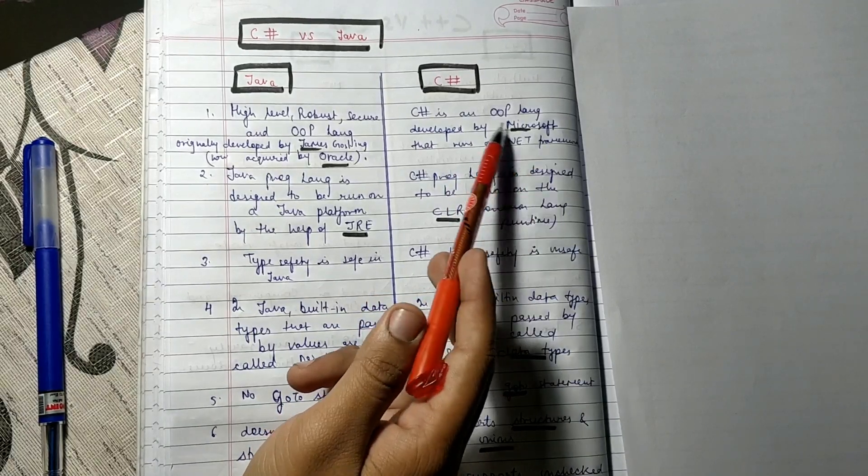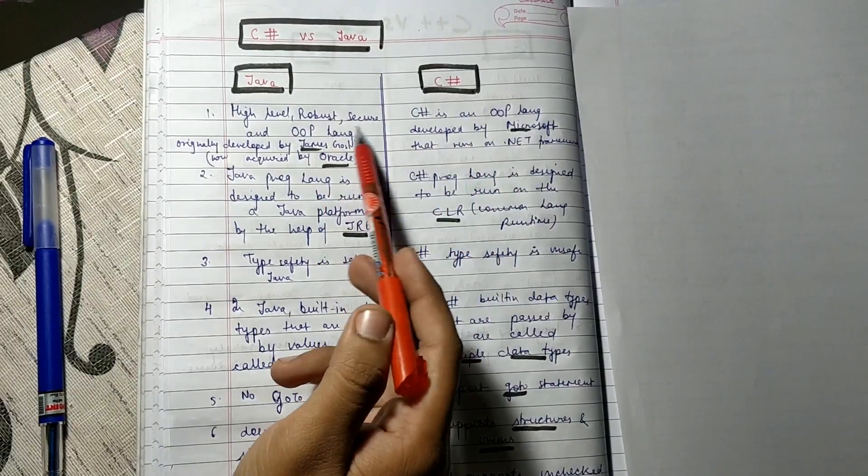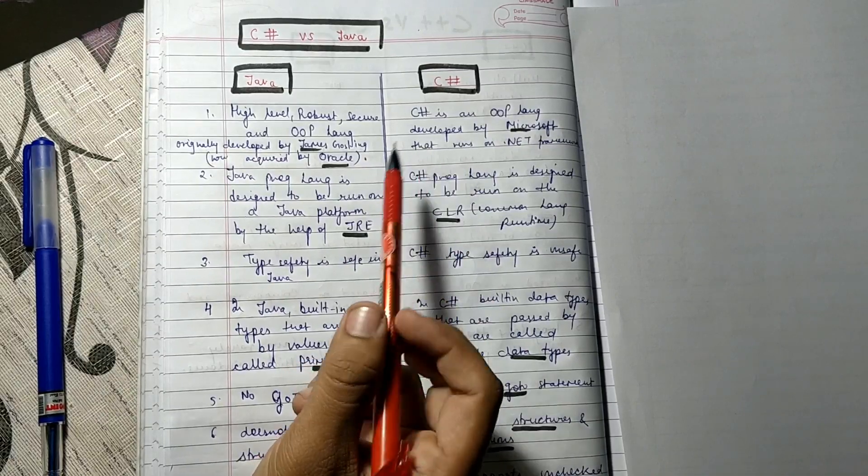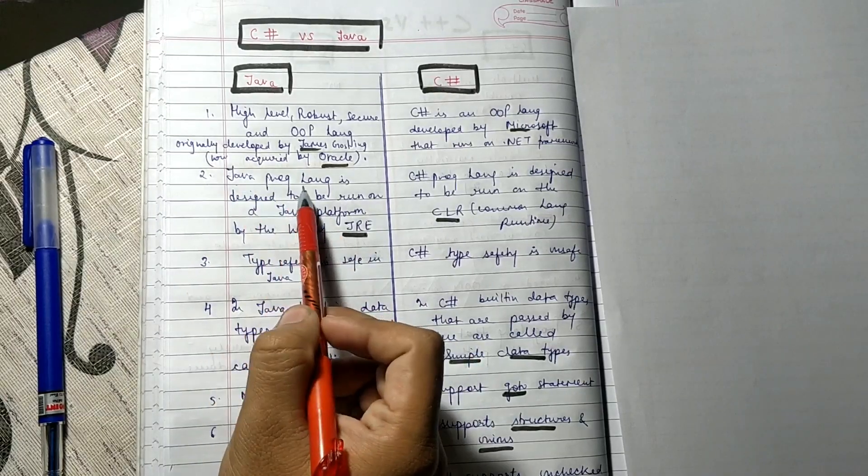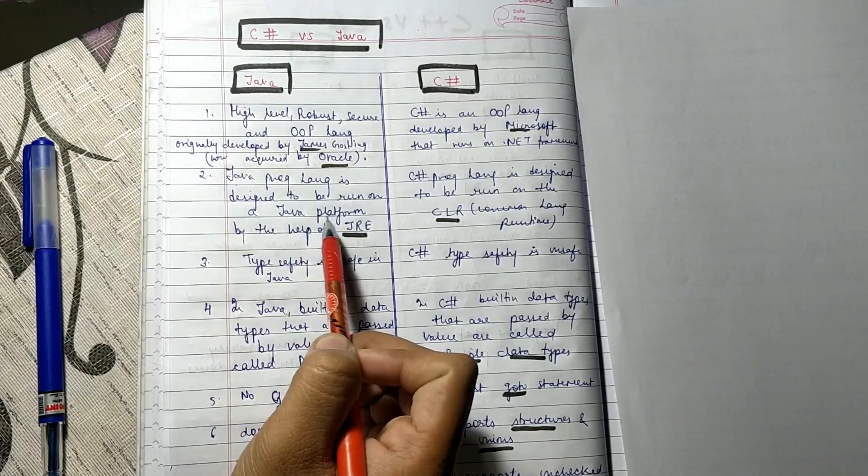C# runs on .NET platform developed by Microsoft. This is the difference: which was developed first? Java language is designed to run on Java platform.